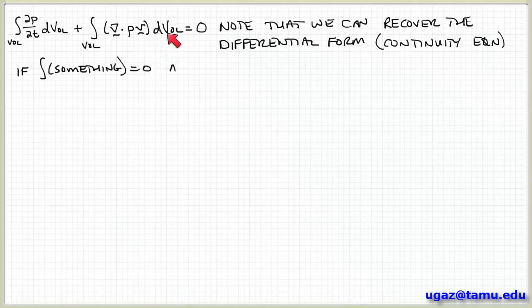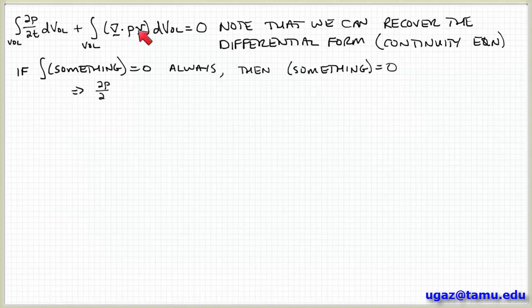So notice that the sum of these two, these are both volume integrals. So we could combine these terms together into one integral because they're both integrated over the same domain. And so if the integral of something equals zero always, then in order for this to be true, the only way that this can be true always is if this something equals zero.